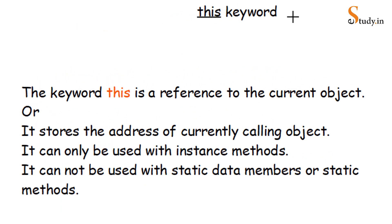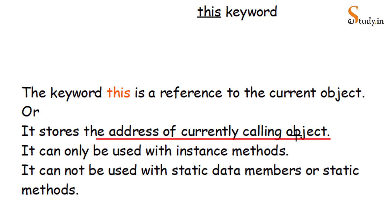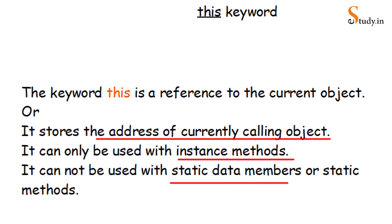Moving on to the next topic — the 'this' keyword. The 'this' keyword is a reference to the current object, or we can say it stores the address of the currently calling object. The 'this' keyword can only be used with instance methods — if a method has the static keyword in front of it, we cannot use 'this'. It also cannot be used with static data members or static instance variables.